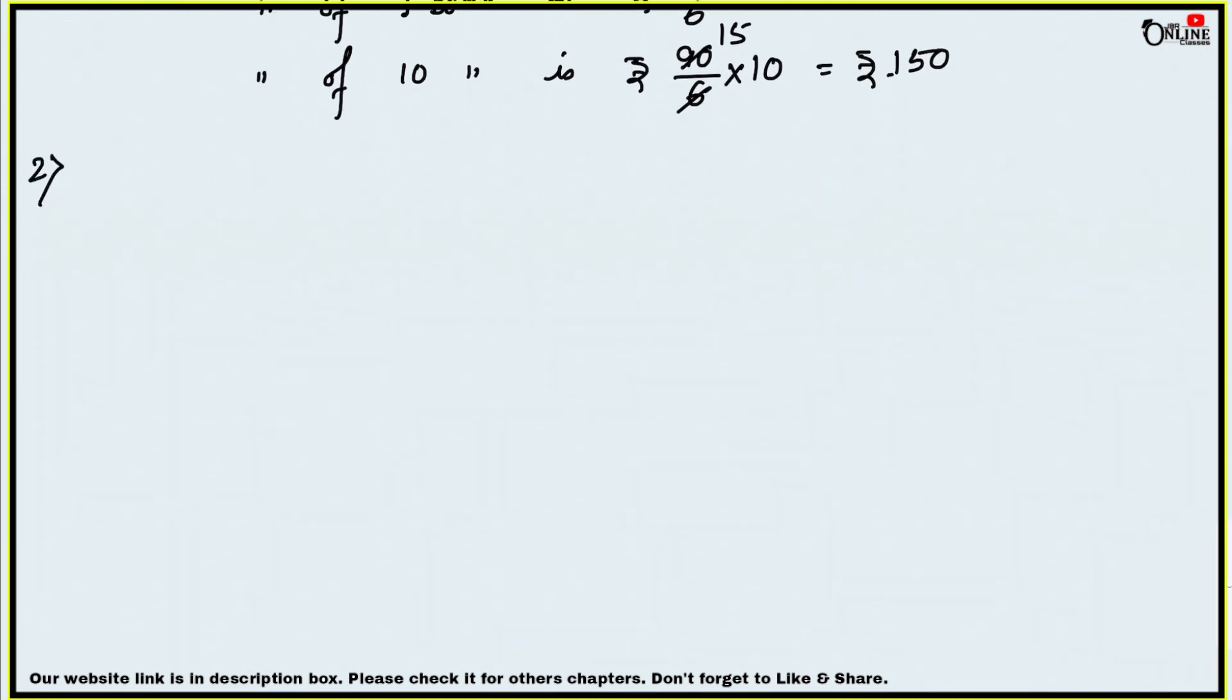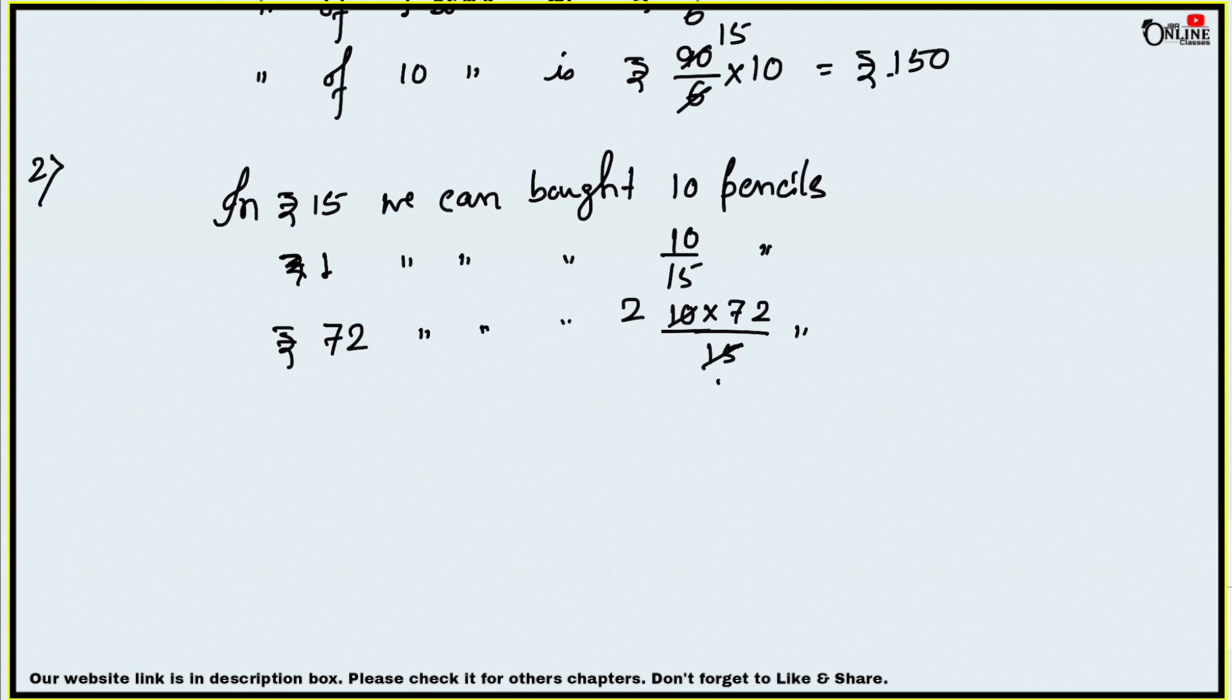Number two: 10 pencils cost rupees 15. How many pencils can be bought with rupees 72? In rupees 15 we can buy 10 pencils. In rupees 1 we can buy 10 by 15 pencils. In rupees 72 we can buy 10 into 72 by 15 pencils, which equals 48 pencils. That is your answer.